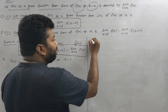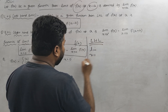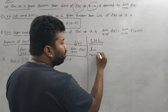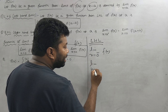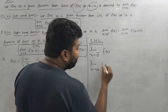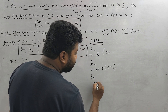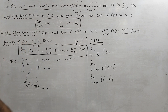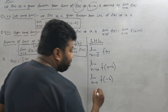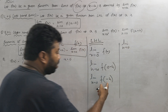So let us check LHL. On the left side, we check the limit as h tends to 0. The limit h tends to 0 of f of 0 minus h. So we substitute into the function, which is mod x divided by x. The limit h tends to 0 of mod of minus h divided by minus h.